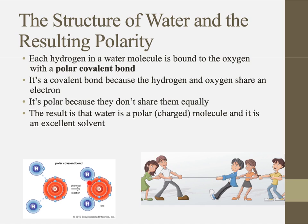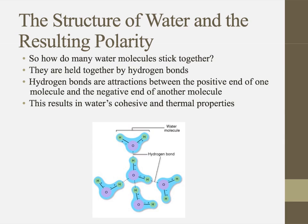That oxygen atom pulls those shared electrons a little bit closer to its center than those hydrogens. Because those electrons are negative and they're closer to the oxygen, that oxygen tends to be negative. And because those electrons are farther away from the hydrogen center, those hydrogens tend to be positive. That's very different from hydrogen bonding — in hydrogen bonding, we're not sharing any electrons. Those water molecules stuck together via hydrogen bonding are just held together via an attraction between the positive hydrogen end of one molecule and the negative oxygen end of another.